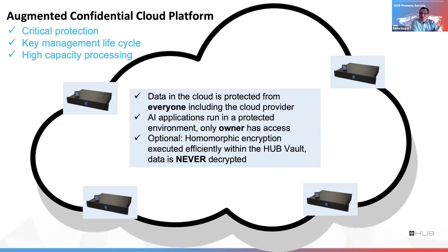The thing about cloud data is that in many cases, the people who work for the cloud company, or the people who operate the computers in the cloud company, can see the data. In the case of Hub Security, nobody in our company has access to any of this data. These platforms are even secure from ourselves.